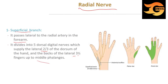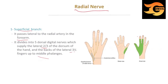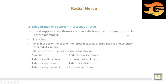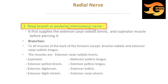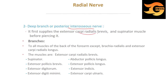Only up to the middle phalanges; the remaining area is supplied from the anterior palmar digital nerve. The deep branch of the radial nerve, or posterior interosseous nerve, first supplies the extensor carpi radialis brevis and the supinator muscle before piercing it.